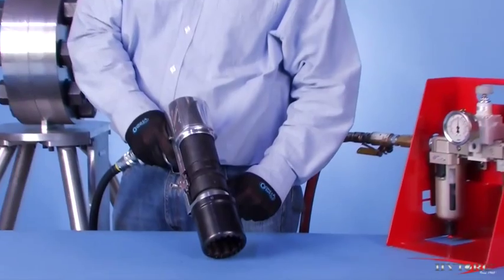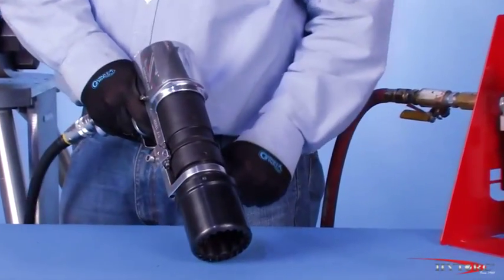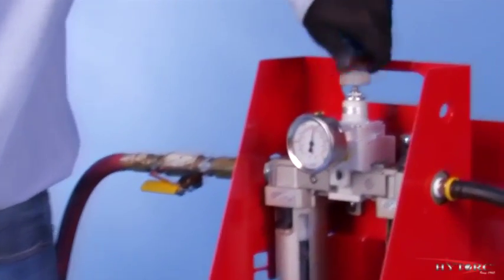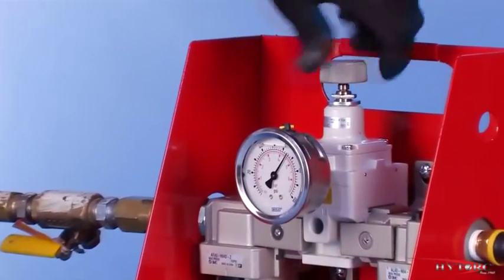To remove the nuts, reverse the process, this time beginning in low-speed power mode. The effects of time and corrosion can make nuts or bolts more difficult to remove than they were to tighten.